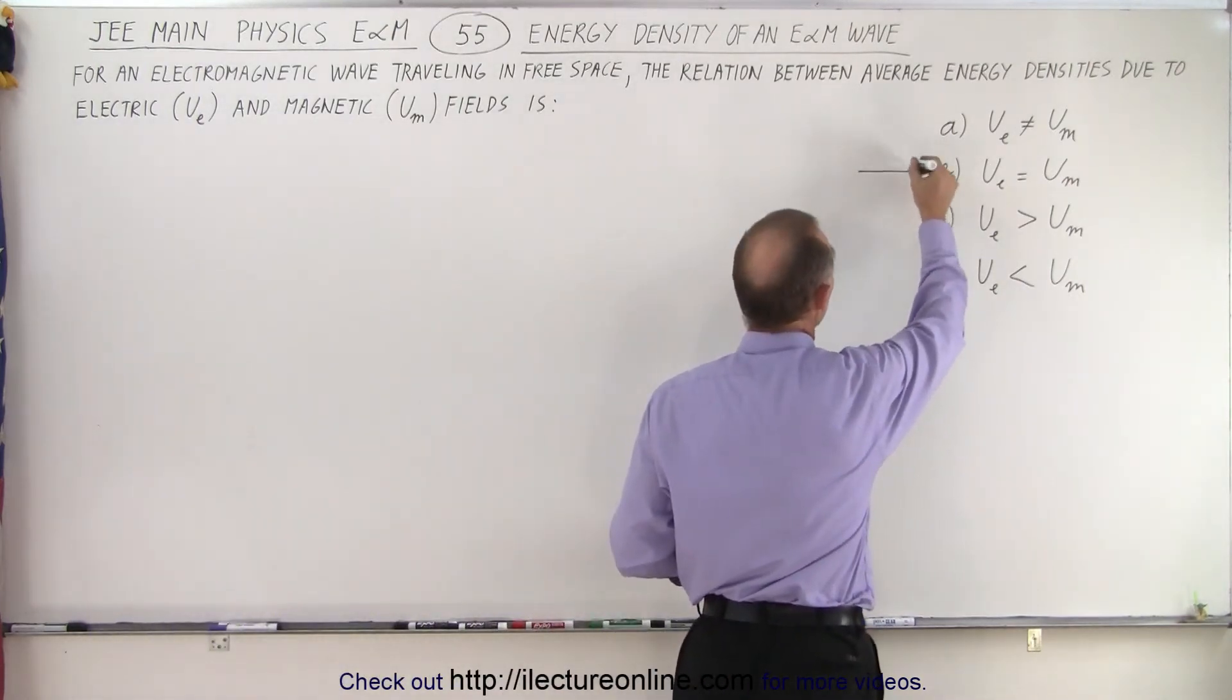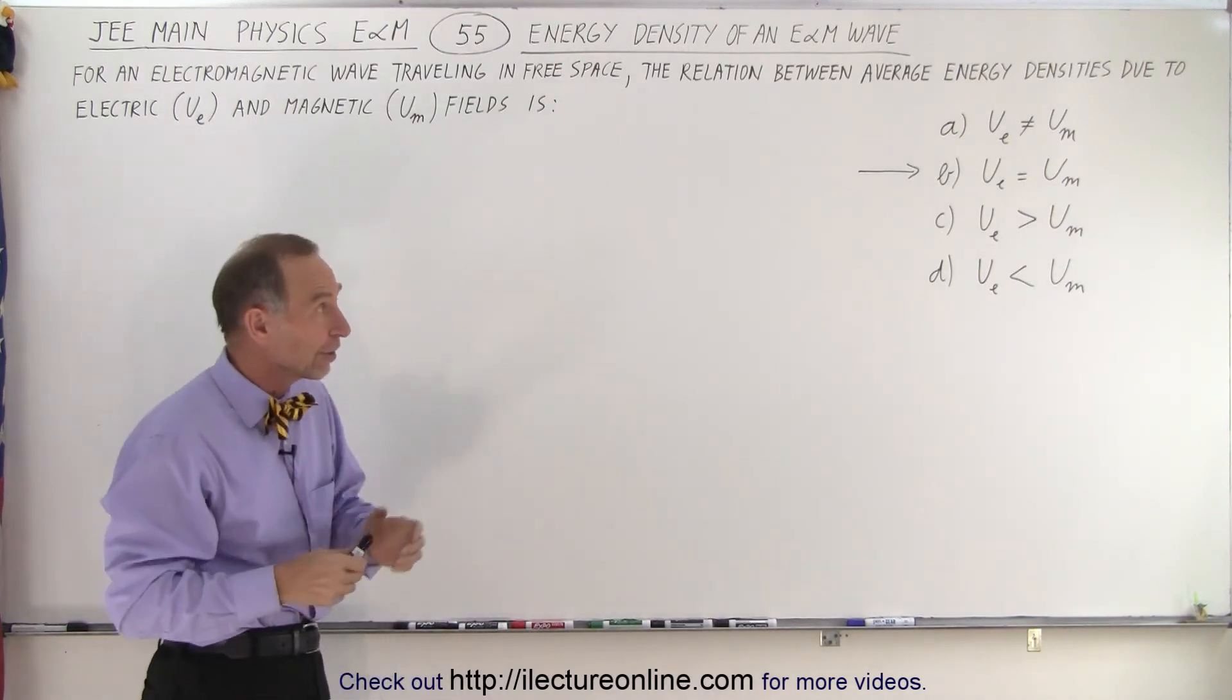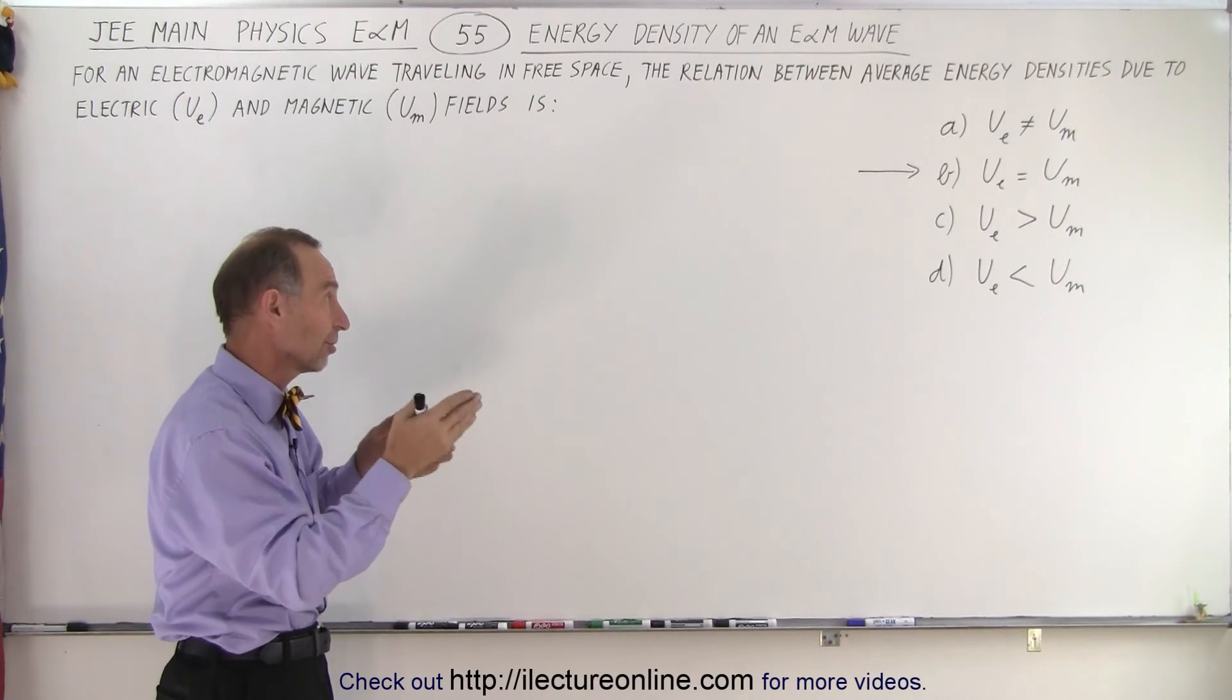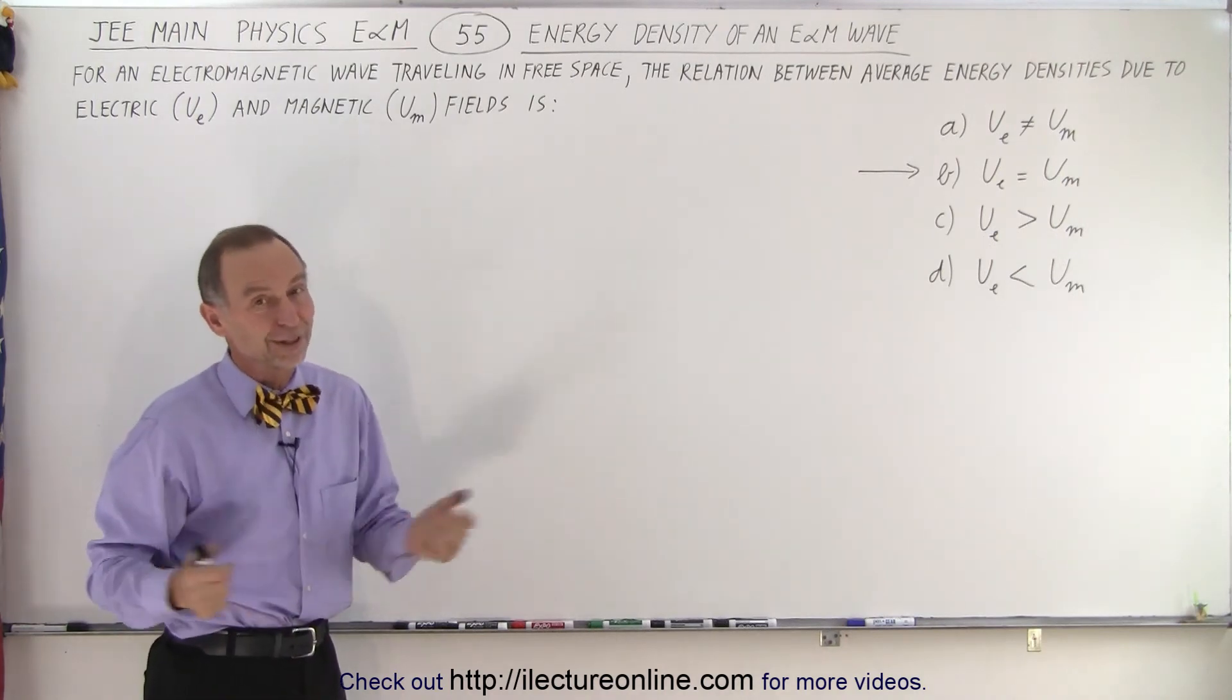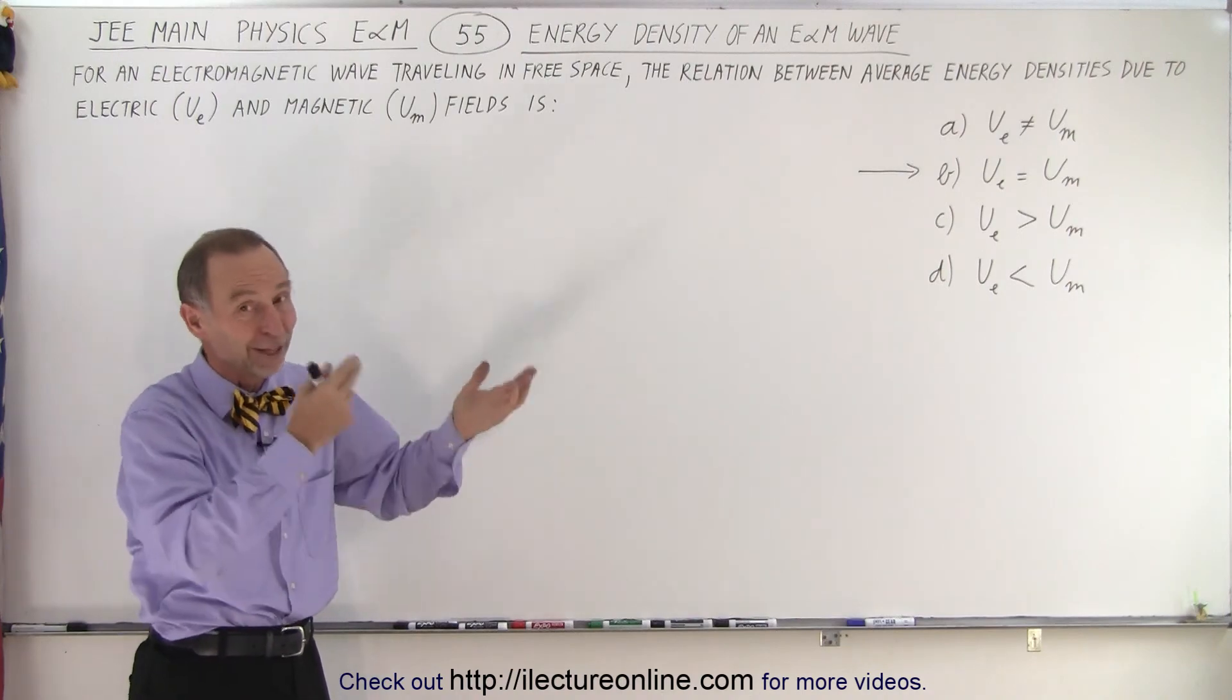So by simply knowing that the energies contained within the electric and magnetic fields are the same, so therefore the energy densities are the same, there's the answer. Move on to the next question. So simply you either know it or you don't, and that is how it's done.